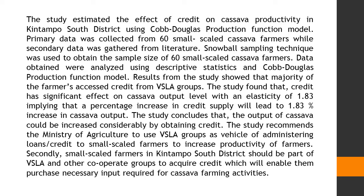The study concludes that the output of cassava could be increased considerably by obtaining credit. The study recommends the Ministry of Agriculture to use VSLA groups as a vehicle for administering loans and credit to small-scaled farmers to increase productivity. Additionally, small-scaled farmers in Kintampo South District should be part of VSLA and other cooperative groups to acquire credit, enabling them to purchase necessary inputs required for cassava farming activities.